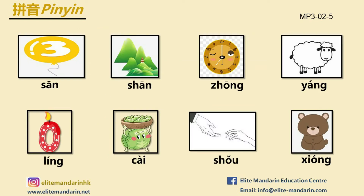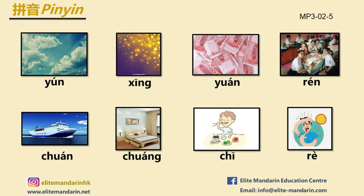Now let's do some exercise. Try to spell the syllables. Look at the pictures and read the monosyllabic words aloud: 三, 山, 中, 阳, 灵, 菜, 手, 熊, 云, 星, 圆, 人, 船, 床, 吃, 热.